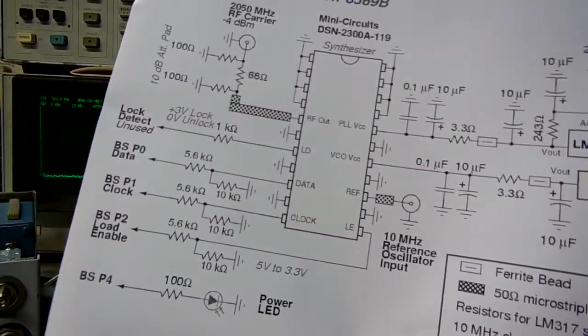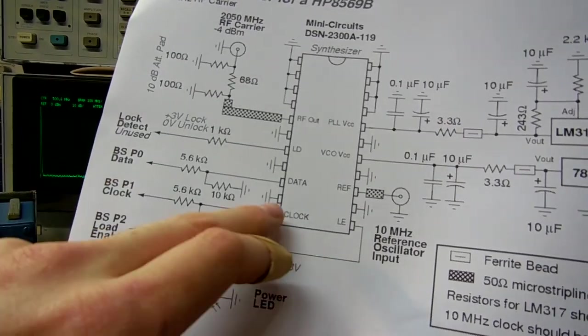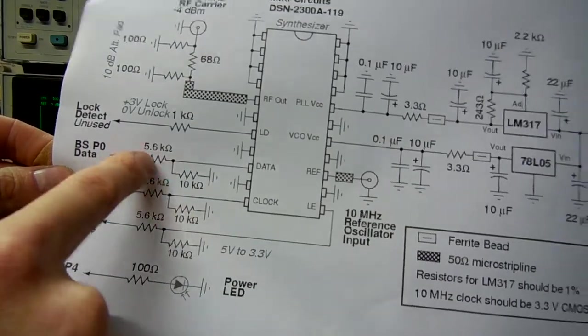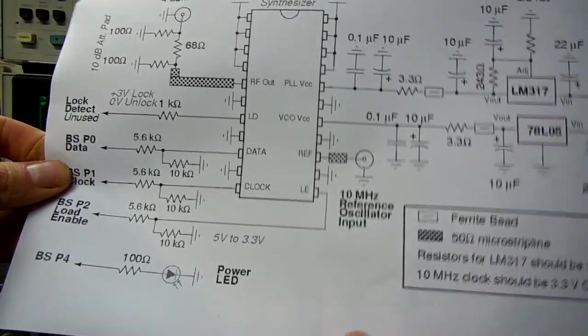The basic stamp ports put out 5 volts and the synthesizer requires 3 volt logic. So we have to have resistor voltage dividers to knock it down from 5 to 3.3.